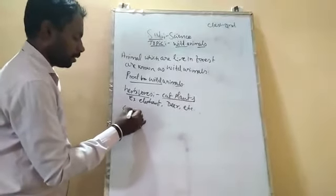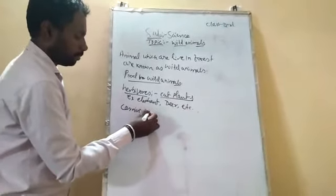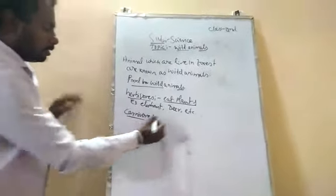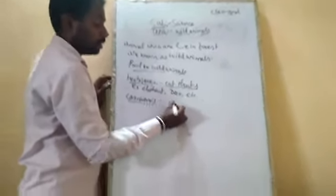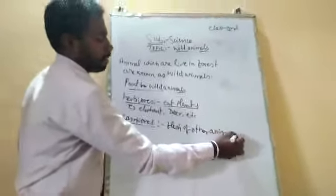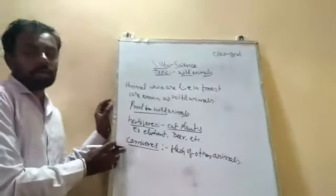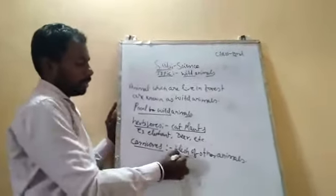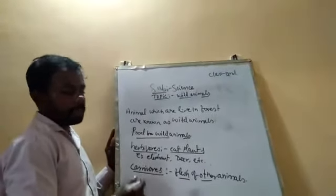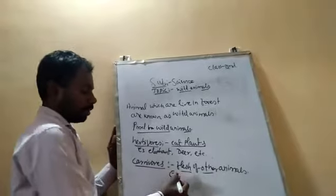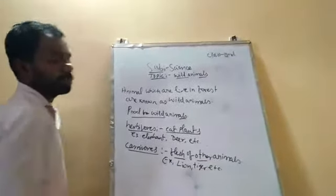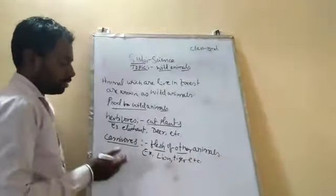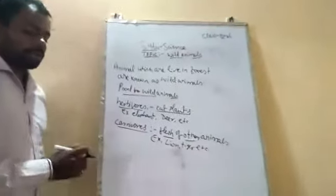The next type of animal is the carnivores. In the forest, some of the animals eat only the flesh of other animals. They are known as carnivores. The examples of these animals are the lion, tiger, etc. That means they eat only the flesh of other animals — they are known as carnivores.